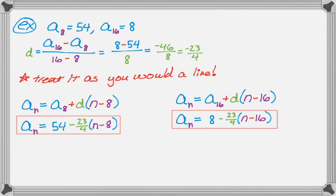And I could have been done there. So if I wanted to write this in terms of the first term of the sequence, I need to figure out the first term of the sequence. The whole idea here is no matter which of these I use, I'm going to get the same value. So a sub 1 should be 54 minus 23 over 4 times negative 7, which gives me 377 over 4.